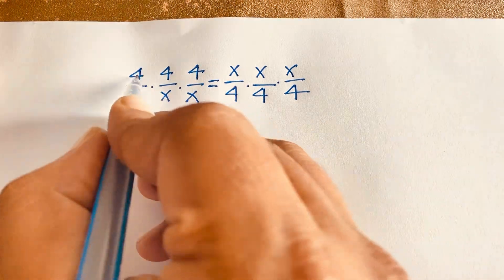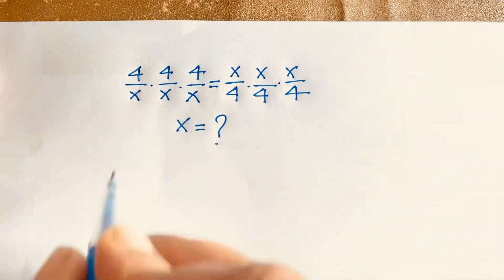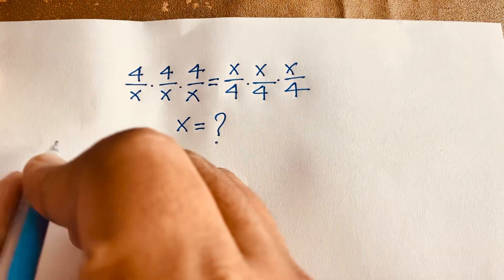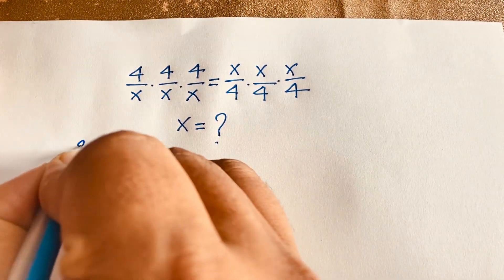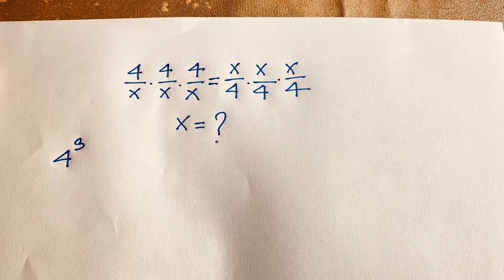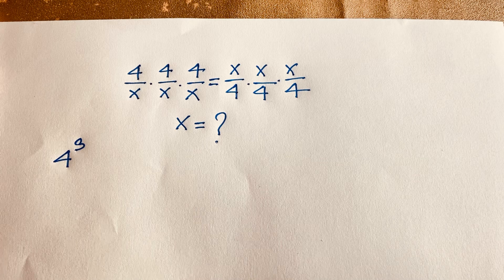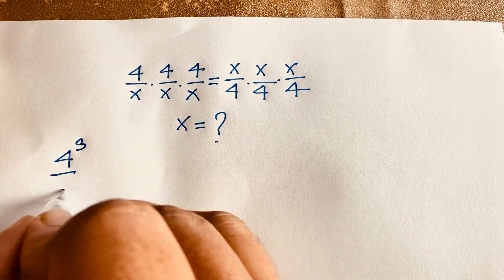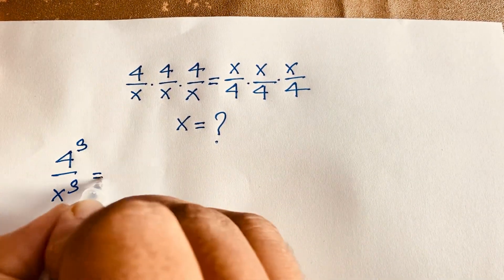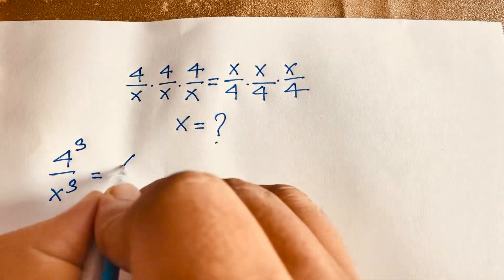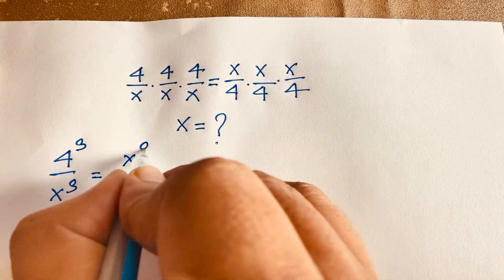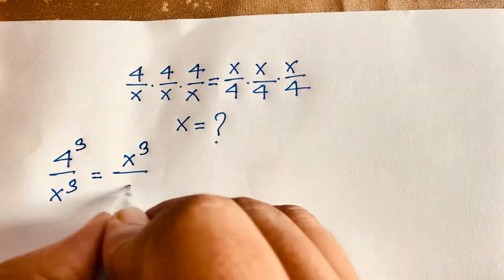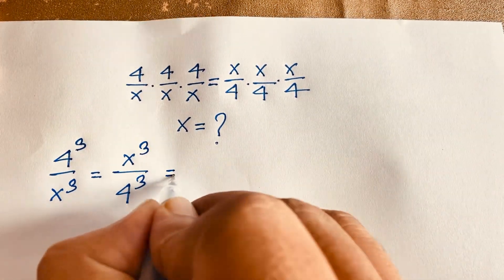Our question has 4 times 4 times 4, which is 4 to the power 3. And here x times x times x is x to the power 3. So we get x to the power 3 over 4 to the power 3.